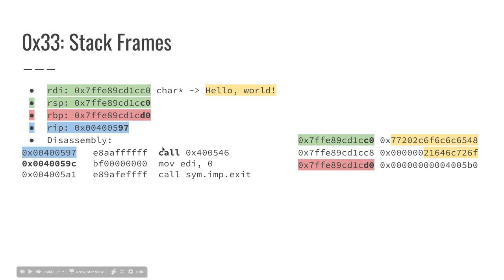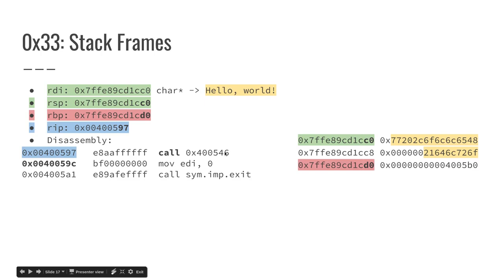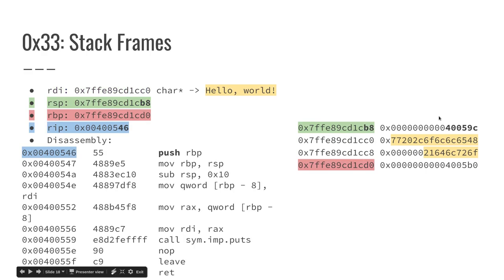The call assembly instruction has a side effect: not only will the instruction pointer be set to main's address 546, but the address of the next instruction — 59C — is going to get pushed to the stack. So call main just happened. The address of the next instruction after calling main got pushed to the stack, and the stack pointer address got subtracted by 8 from C0 to B8.